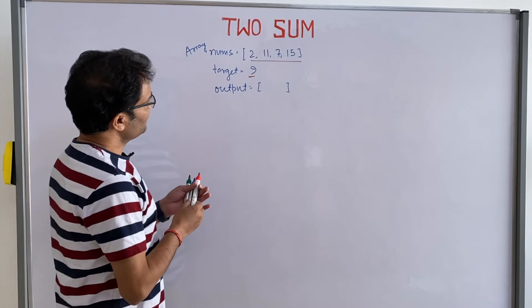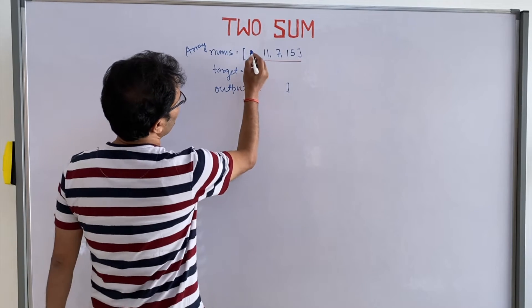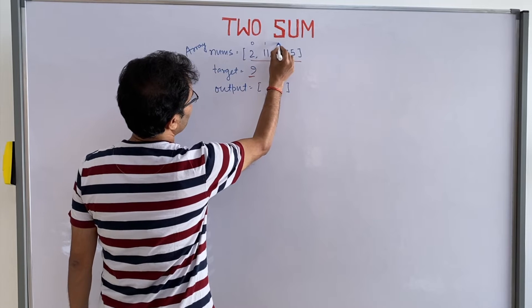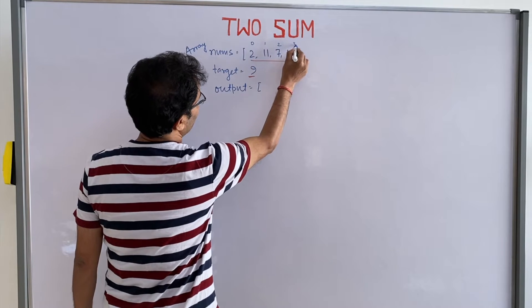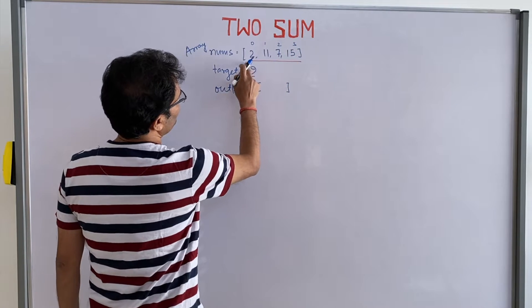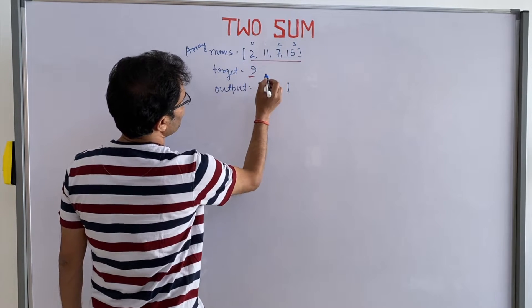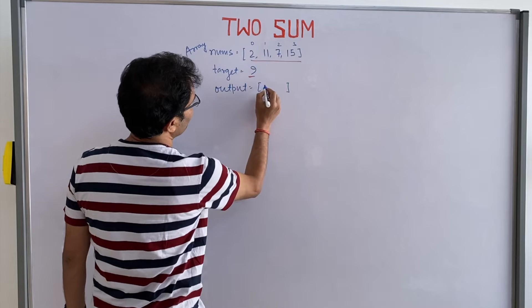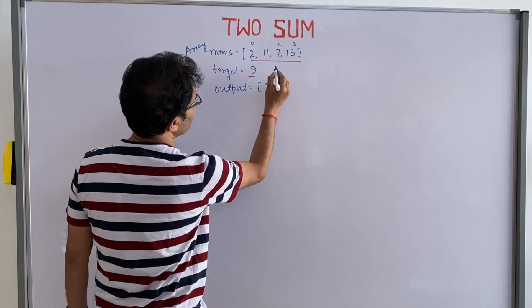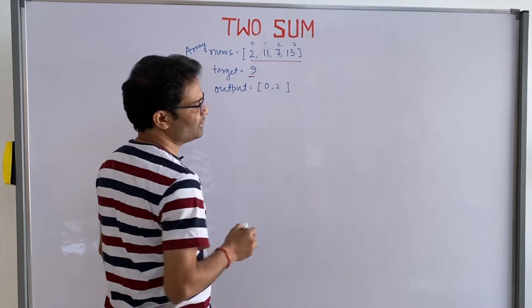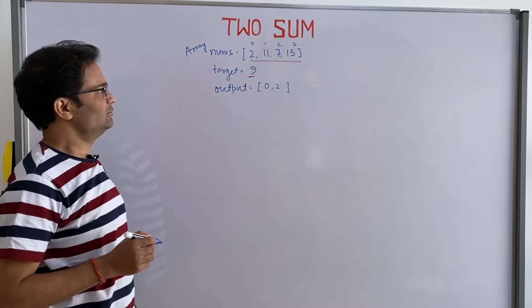The output you have to give is the index. For any array, this is the index. You add 2 and 7: 2 is at index 0 and 7 is at index 2, so you have to return [0, 2].